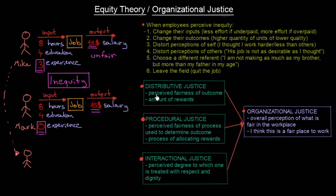Distributive justice is the perceived fairness of outcome or the amount of rewards. In our Mike and Mark case, distributive justice is not well addressed according to Mike — he feels he should be getting more. So the distributive justice is not well developed in this organization, and he feels the outcome is unfair.